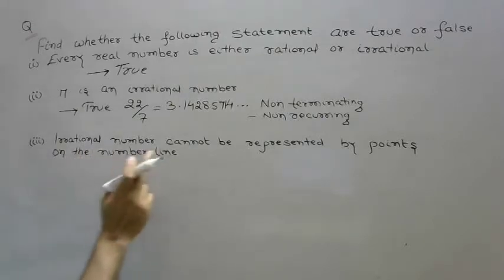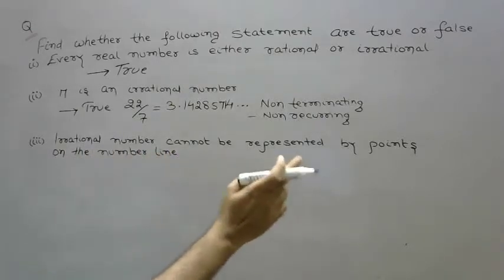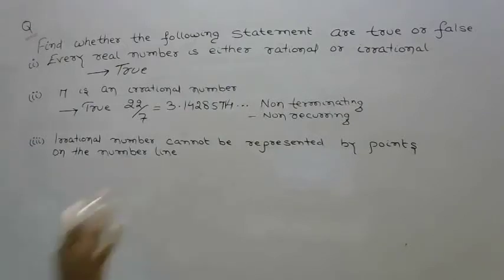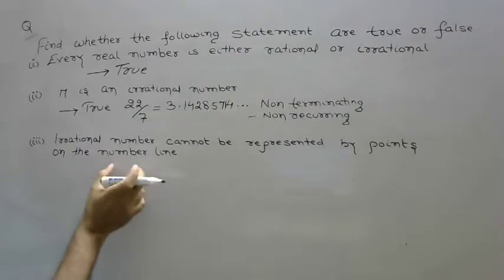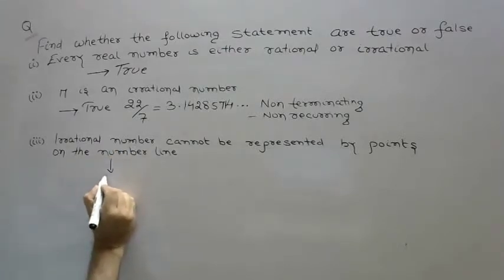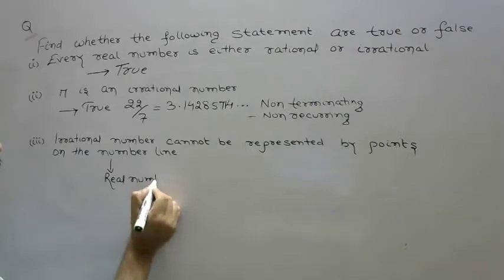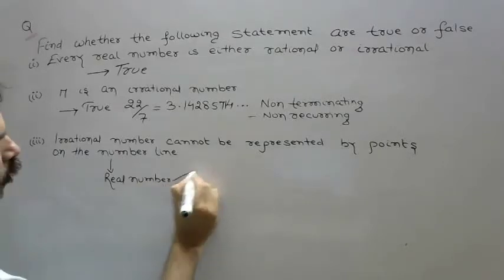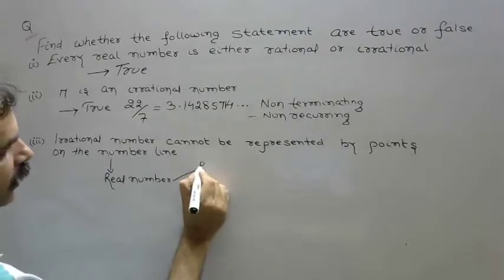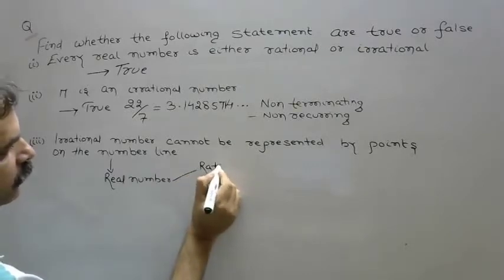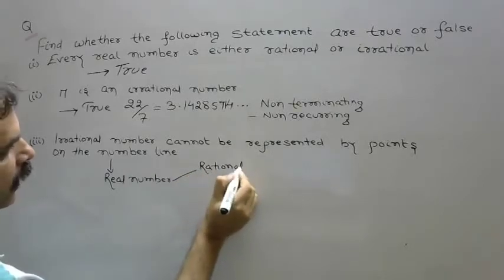Irrational numbers cannot be represented by points on the number line. We are representing real numbers. Okay? And irrational.